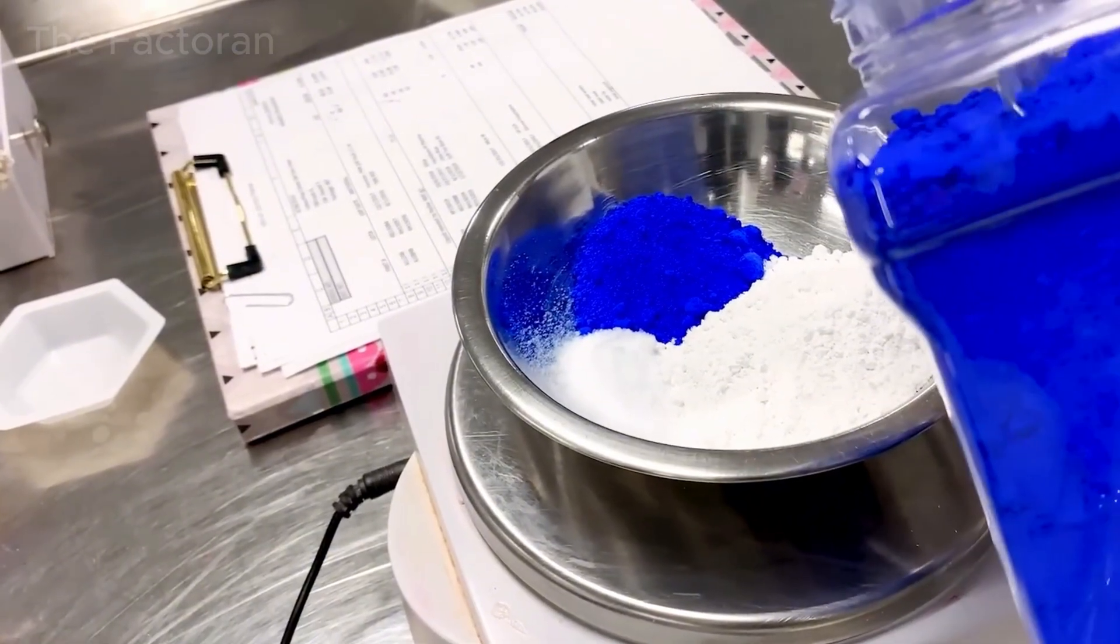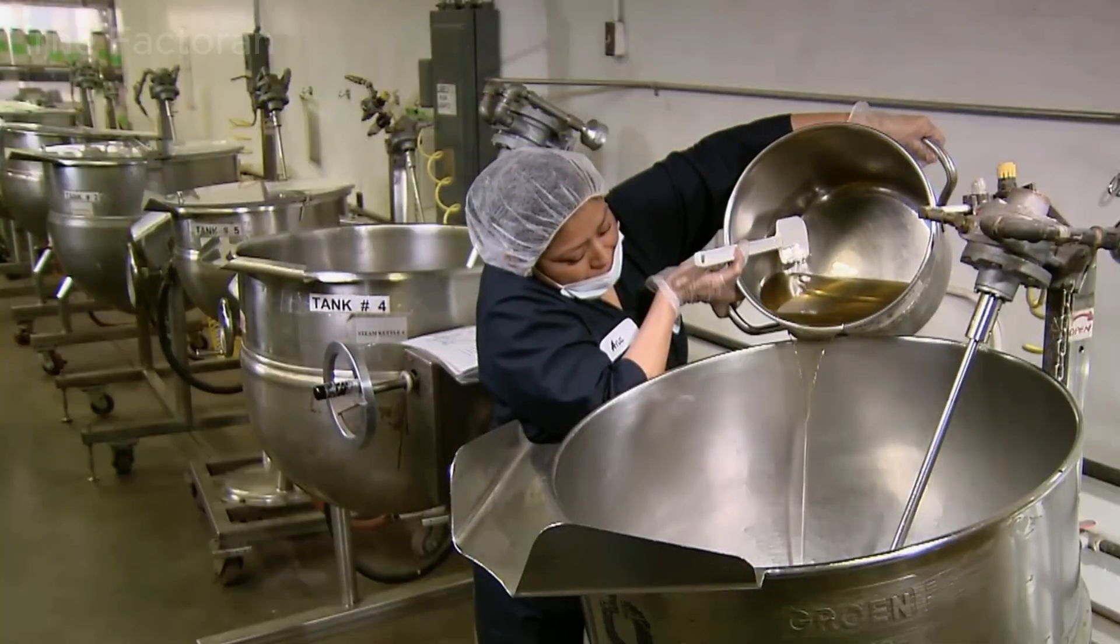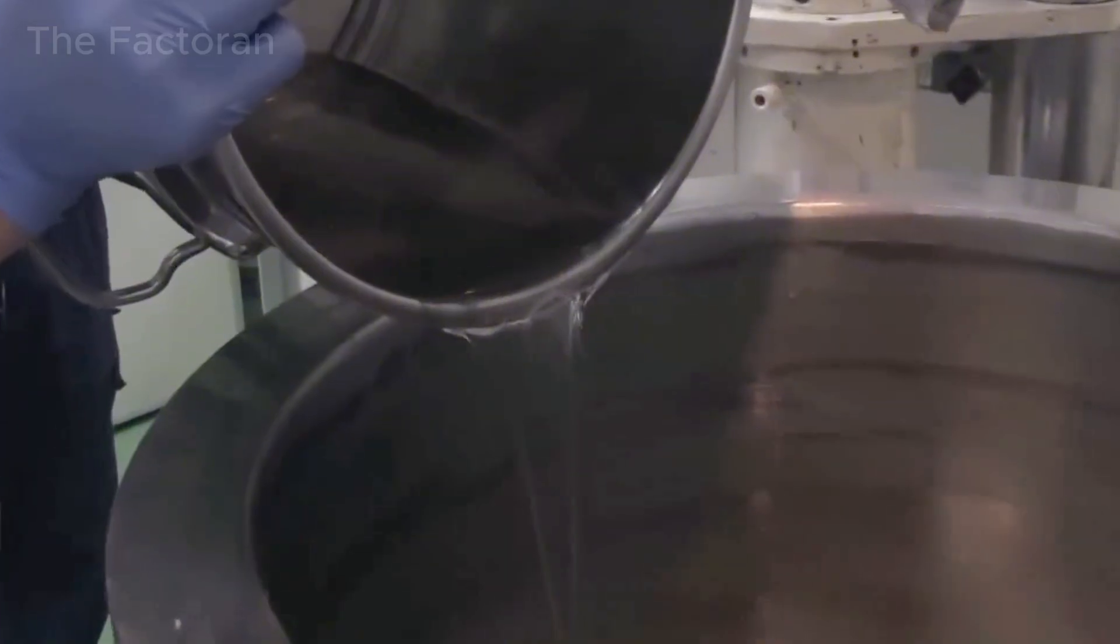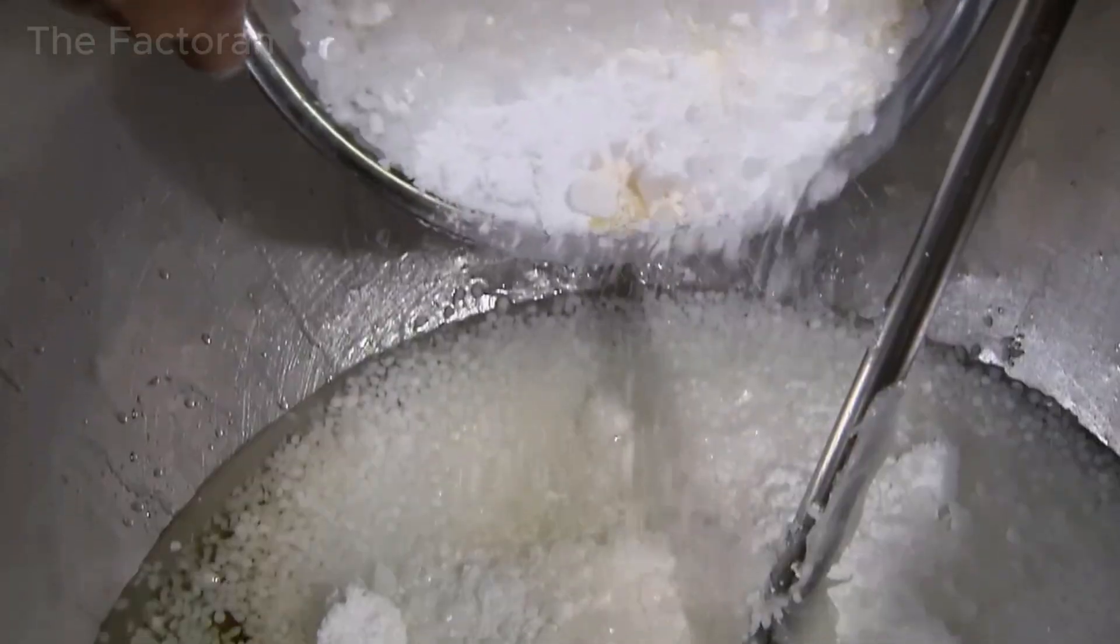After the ingredients are precisely weighed according to the formula, they are transferred into large industrial cooking vessels. Here, the wax is heated to approximately 194 degrees Fahrenheit to melt, while oils and gels are blended evenly into the mixture.